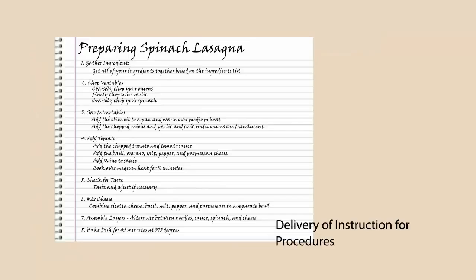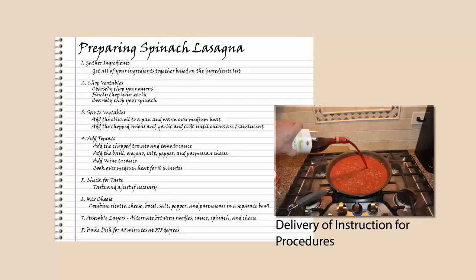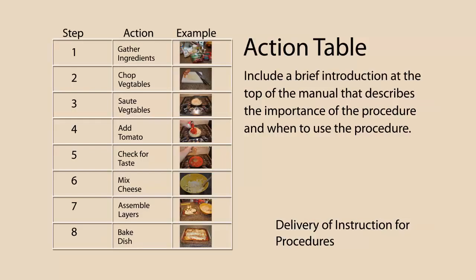When procedures are taught in the classroom, it's not uncommon to provide a manual that the learners can follow as an instructor demonstrates the procedure, often followed by hands-on practice. As an instructional designer developing the manual, consider constructing a manual that uses an action table. Action tables are often characterized as containing three columns: a step, an action, and an example. The manual can include a brief introduction describing the importance and timing of the procedure, followed by the action table. If your manual uses illustrations, keep them close to the words that describe them.